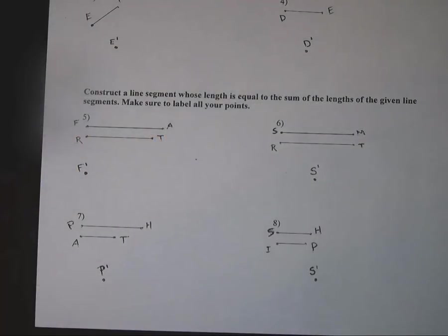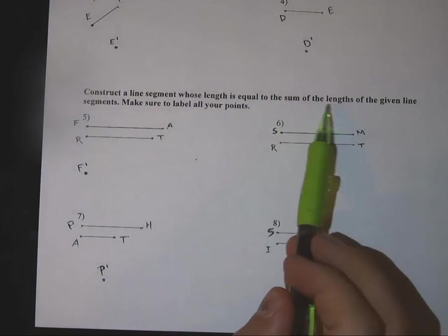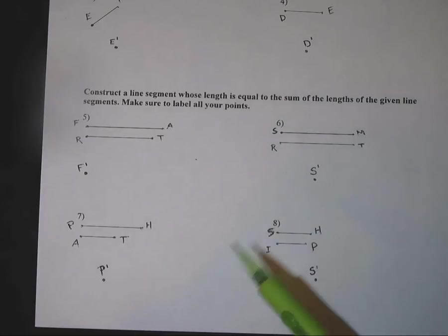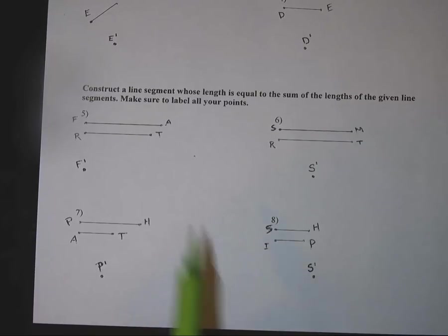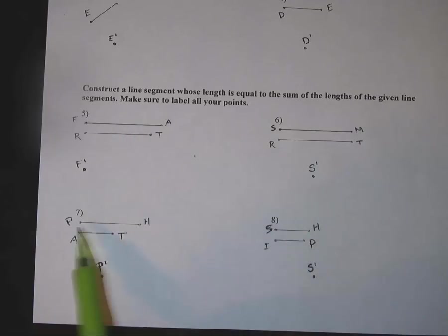All right, so one more example of constructing line segments whose length is equal to the sum of the lengths of the given segments. In other words, the sum of two segments. Just one more example here. This is the worksheet that does need to be completed. I'm going to show you guys how to do number 5. And then hopefully you guys can do 6, 7, and 8 after that if you're not quite following here.